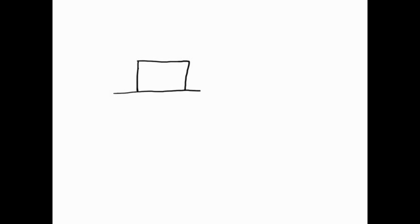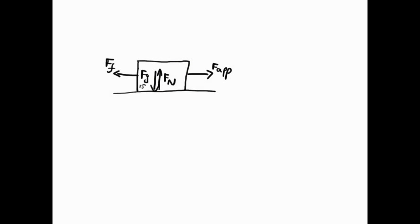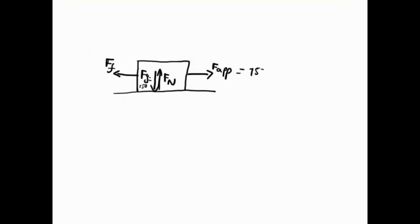We draw the trolley — we could draw an actual trolley or just a block to represent it. We know there's a gravitational force, so there's Fg there. We know there's a normal force as well. And we also know there's a force applied, F app. And we know there's also a frictional force. We can write that Fg equals 150 Newtons, the constant applied force equals 75 Newtons, and the frictional force equals 20 Newtons.